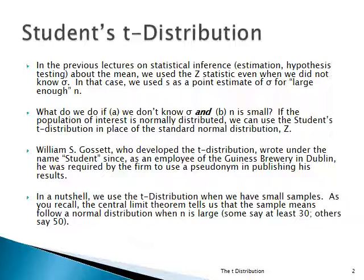Now what are you going to have to do? This is a problem that occurred a long time ago, and William Gosset developed the t-distribution. He used a pseudonym called 'Student,' and you'll see why — basically because he was an employee, he couldn't use his own name. But he developed something called the Student's t-distribution.